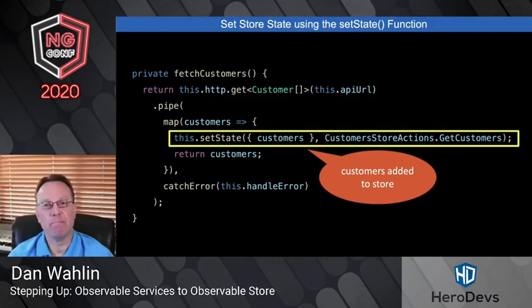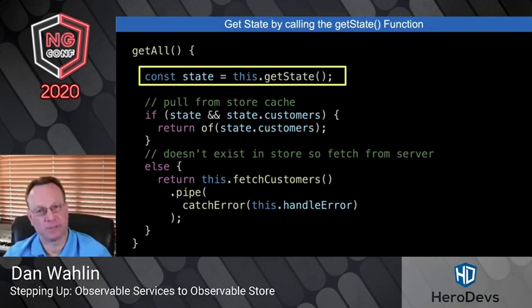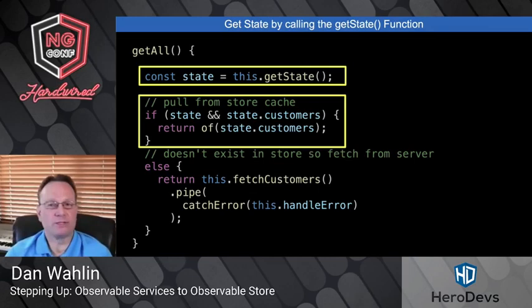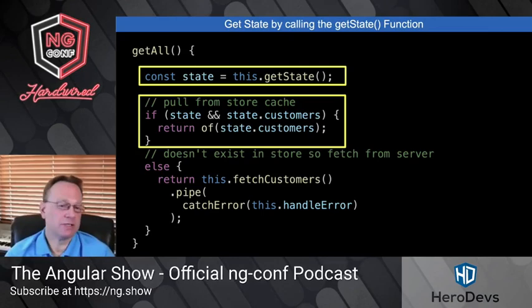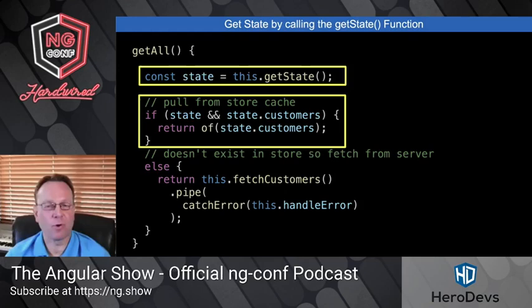Customers will be added to the store in a cloning, immutable way. From there, if you call getAll and you already have customers in the store, you can call getState and if we have customers we can return those — wrapped with 'of' to make an observable — and if we don't, we call fetchCustomers. Very simple. That's how easy it is to get data in and out of the store.